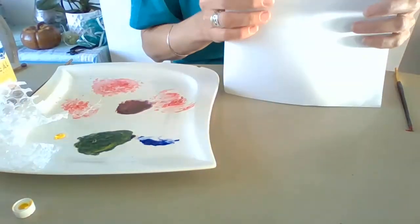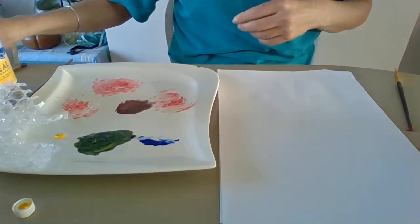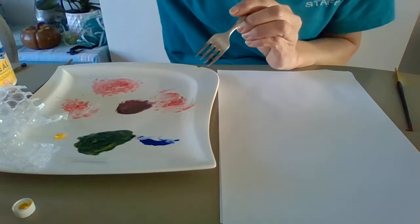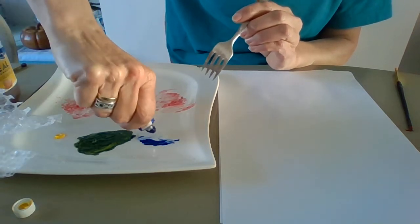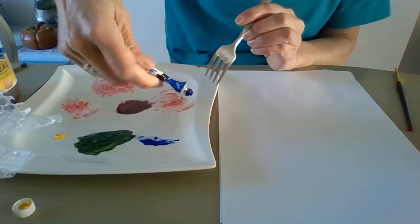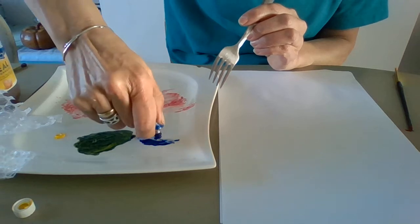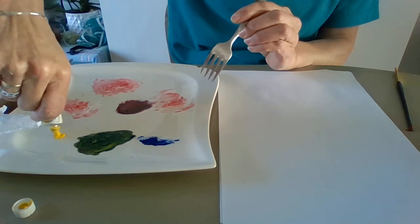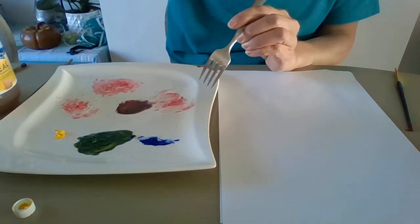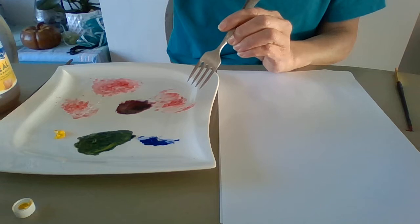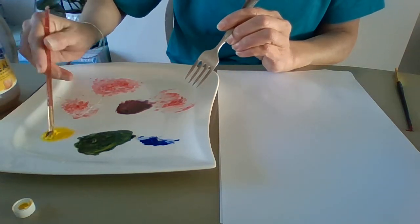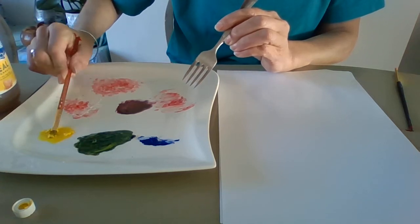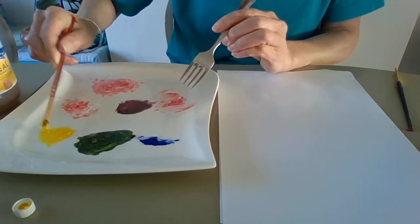I'm going to make some flowers as well. And for that, I'm going to use a fork. I'm going to need a little bit more paint for this. And I think I'm going to make some lovely blue flowers and maybe some yellow ones too. I'm going to mix some water in with the yellow. And I'm going to do the yellow ones first.